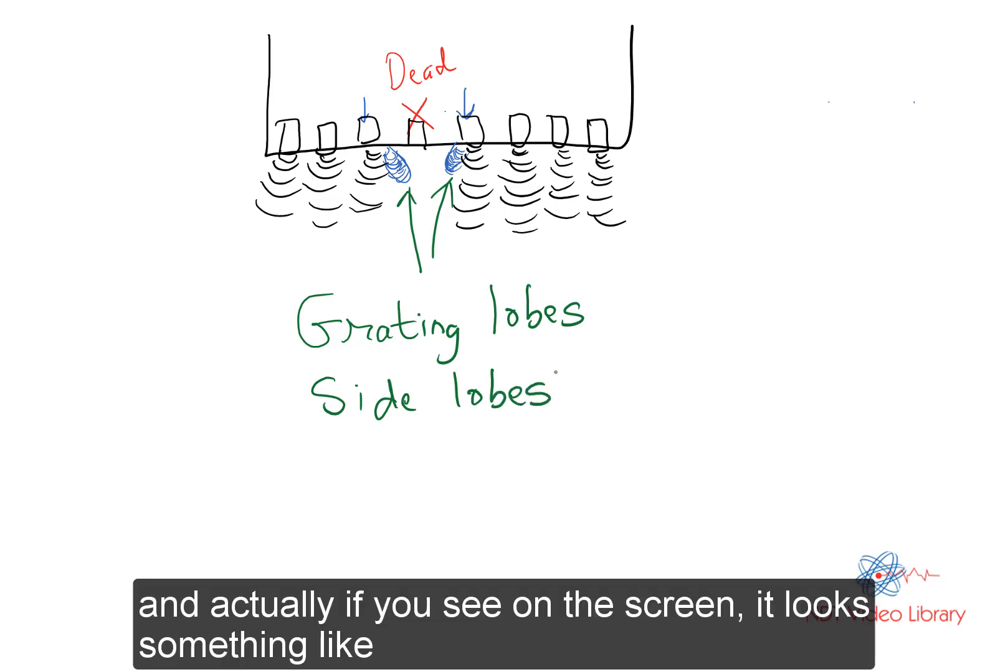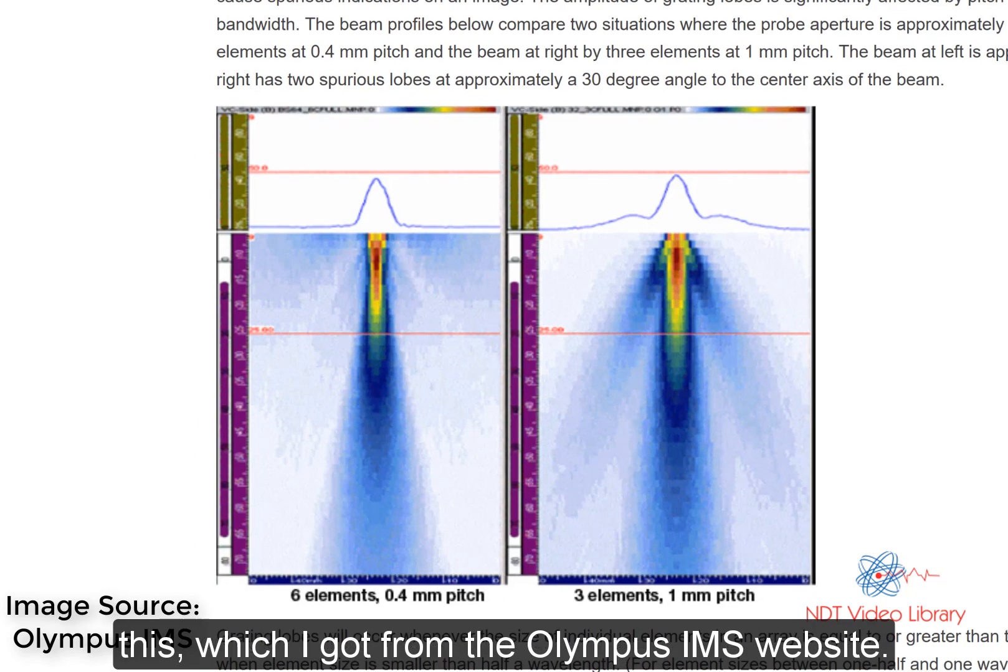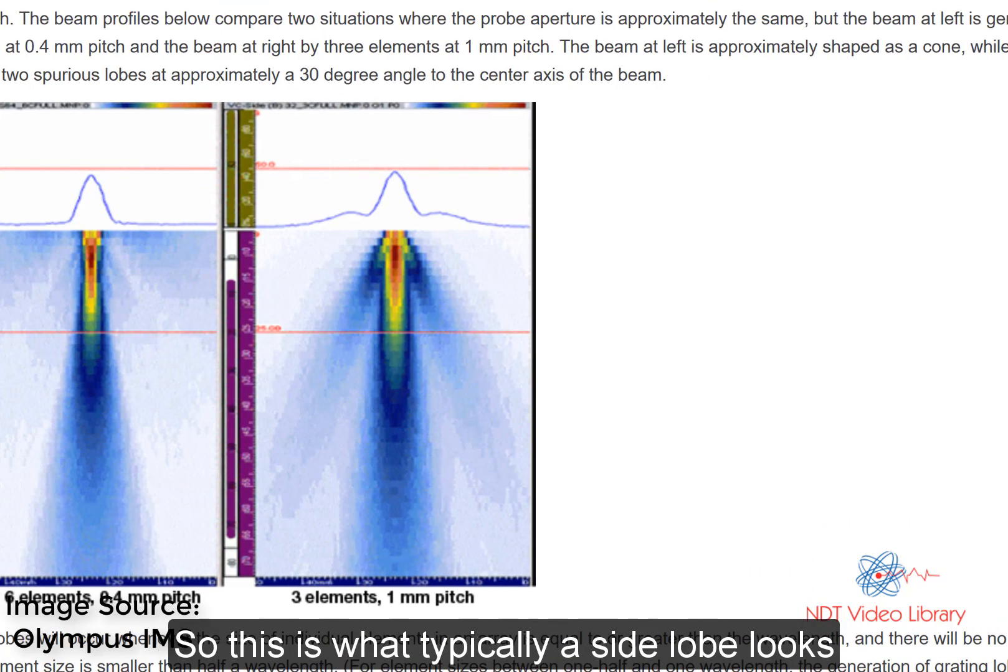Actually, if you see on the screen, it looks something like this, which I got from the Olympus website. So this is what typically a side lobe looks like.